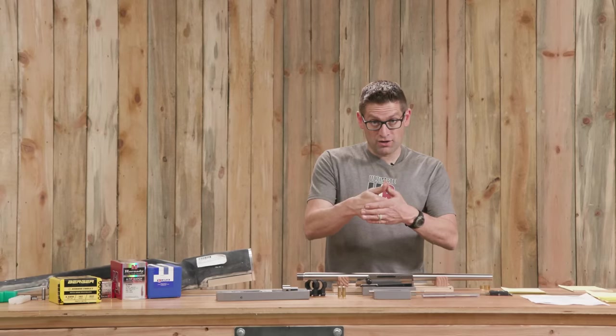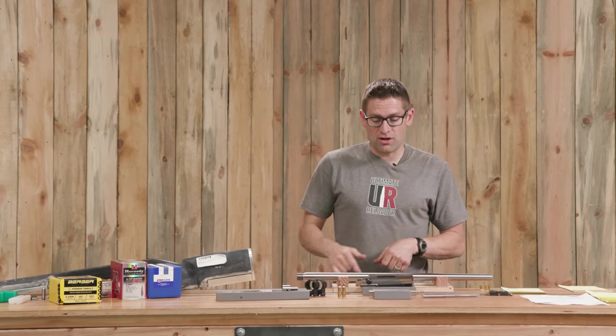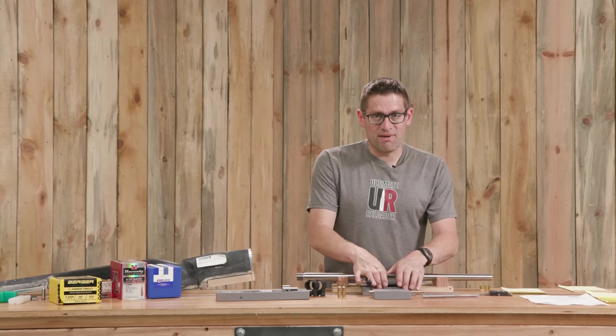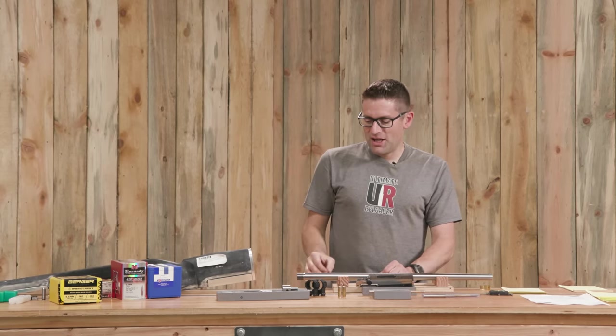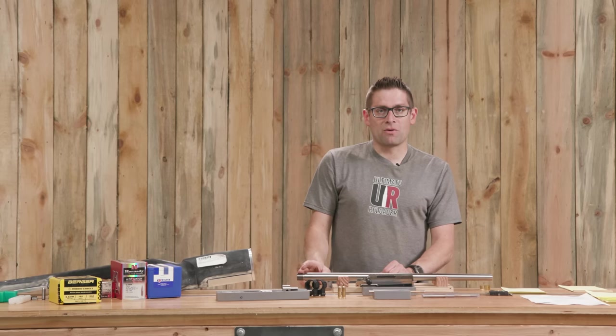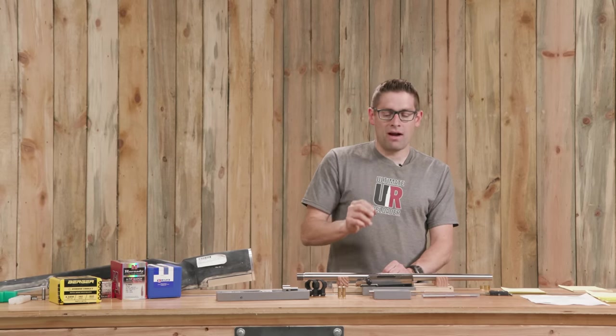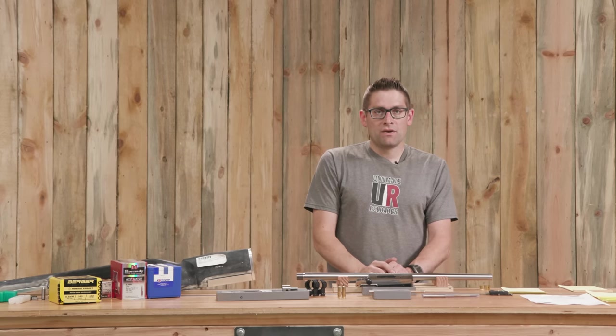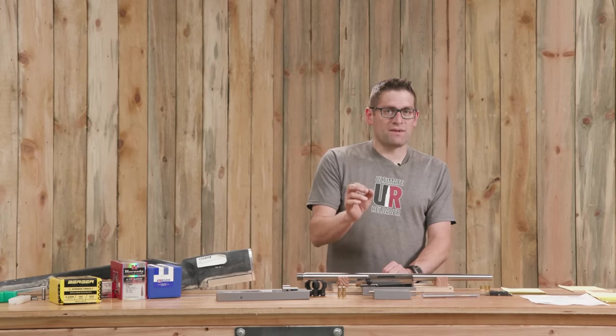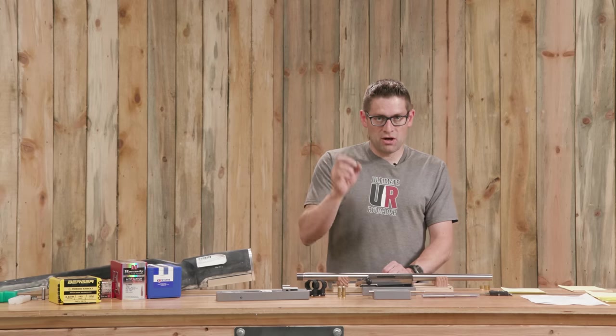I went two thousandths too deep. Now I'm going to have about two thousandths of crush when I tightened that barrel extension on. This is a custom action of the highest magnitude of precision and we've got a custom barrel job. So we're going to have less crush when the receiver tightens down against the barrel.